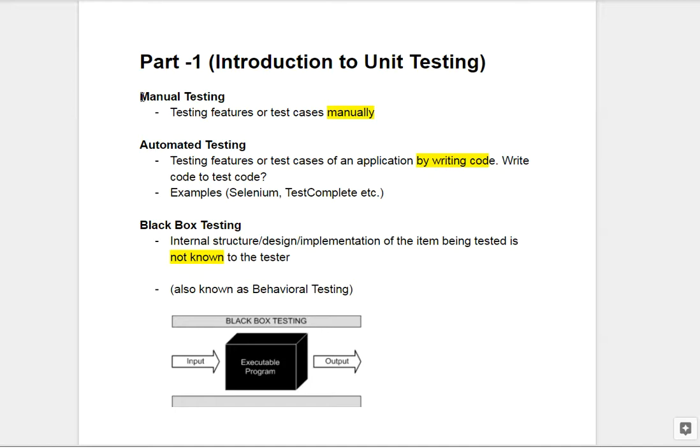What is automated testing? If we do the same login testing by writing code — we will use some tool, write some code, and that tool will do these things: entering the login, entering the password, and clicking the button automatically. We will call it automated testing. This is just one example of automation testing, or UI automation testing, where we test the UI behavior by tool.